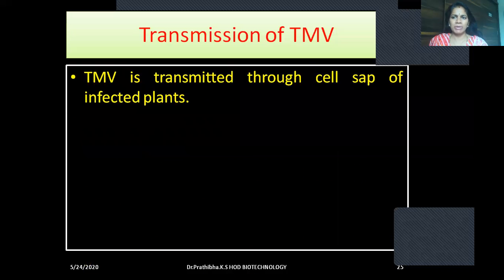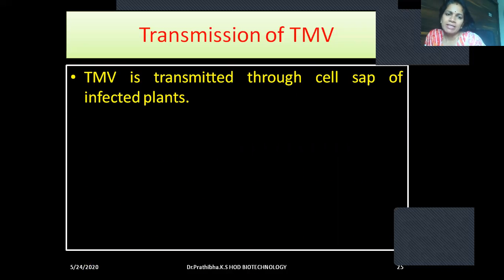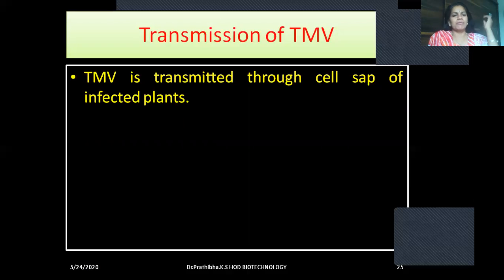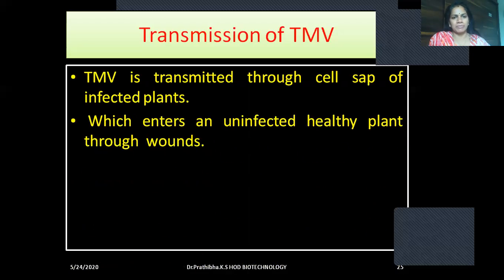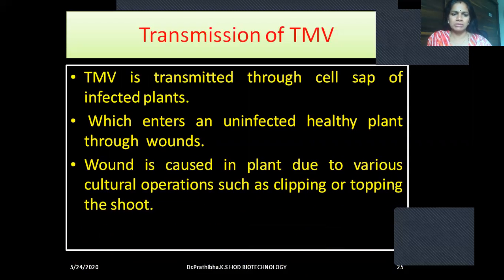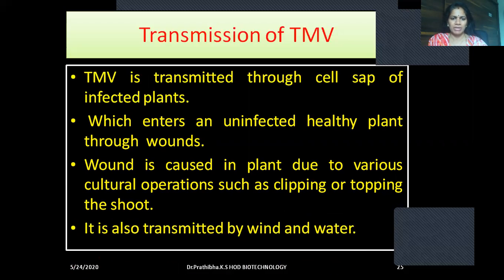Now, transmission of tobacco mosaic virus. The TMV is transmitted through the cell sap of an infected plant, which enters an uninfected healthy plant through wounds. Wounds are caused in plants due to various cultural operations such as clipping or topping the shoot. It is also transmitted by wind and water.